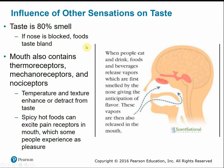Taste and smell are complementary — taste is really about 80% smell. If the nose is blocked, foods don't have as strong a taste. When eating and drinking, vapors are released that you smell before you taste the food, giving the brain anticipation of what it will taste like. The mouth also contains thermoreceptors, mechanoreceptors, and pain receptors. Temperature and texture can enhance or detract from taste — cold versus hot pizza, or french fries that are only good when hot and fresh.